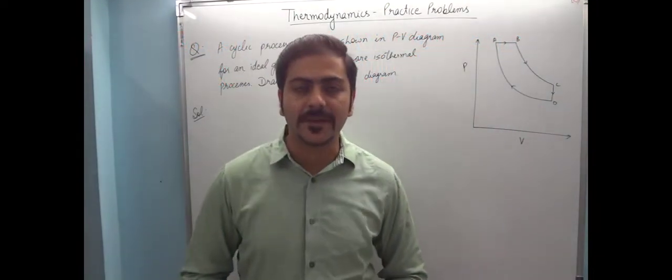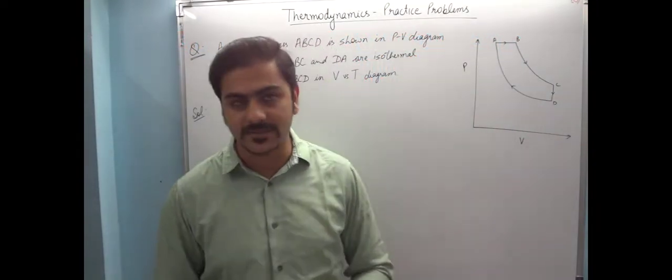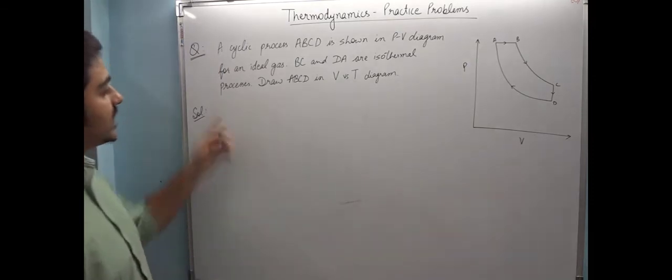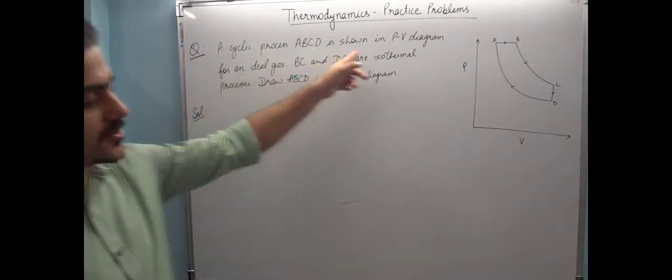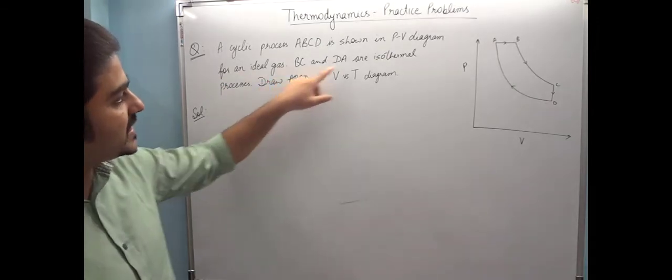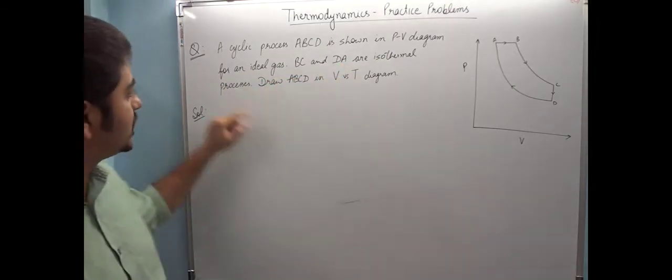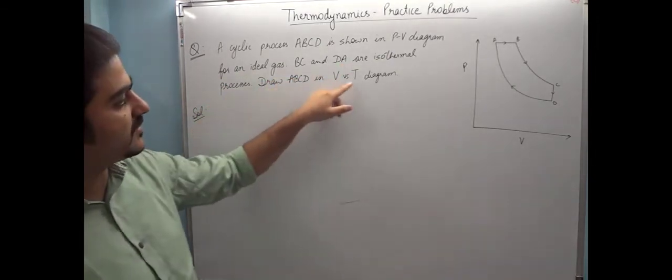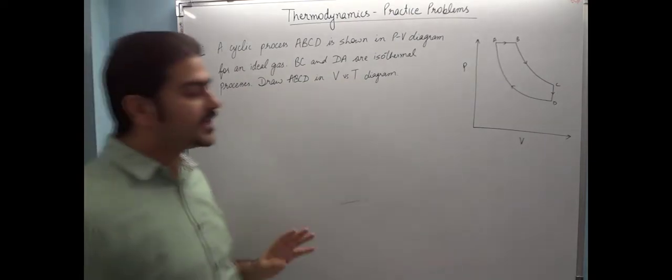Hi friends, let's do a practice problem on thermodynamics. The question is: a cyclic process ABCD is shown in the PV diagram for an ideal gas. BC and DA are isothermal. Draw ABCD in V versus T diagram.